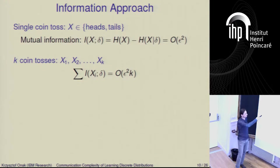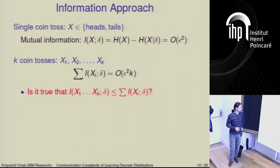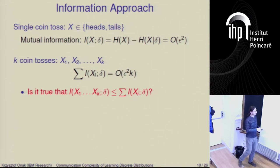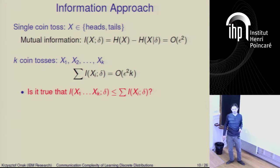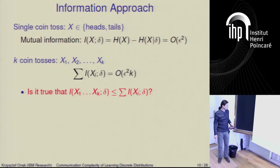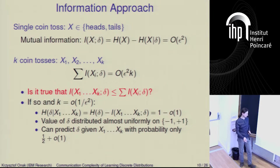Now suppose we have multiple coin tosses X1 through Xk. Using what we've already learned, the sum of mutual informations is going to be epsilon squared times k. The important question is: can we show that this sum bounds the mutual information between all those coin tosses and the hidden bias? If this were true and k is asymptotically less than 1 over epsilon squared, then the mutual information between all coin tosses and delta is subconstant.